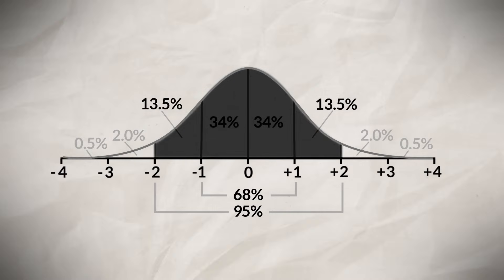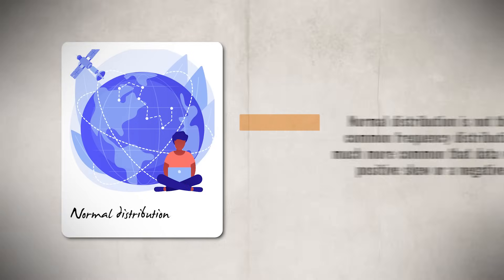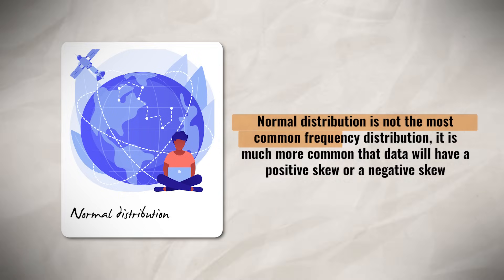Now, when looking at the standard deviation, we can see a couple different distributions occur. Sometimes we might have a normal distribution. This takes the shape with a symmetrical bell-shaped curve. Here we have just one mode, and the mean, median, and mode are located at the center of the distribution, at the zero point value. A normal distribution is not the most common frequency distribution.